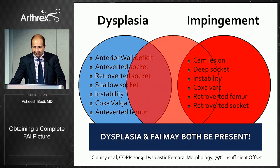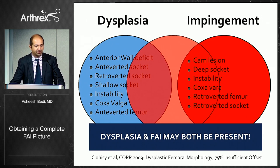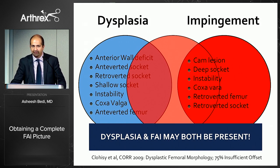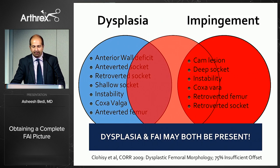This Venn diagram illustrates a continuum. Dysplasia morphology includes increased anteversion, decreased acetabular coverage, and a predilection to the female population. Impingement is the opposite: retroversion, a large cam lesion, a deeper socket. But the Venn diagram isn't entirely accurate because you can have dysplasia and FAI findings in the same patient — proximal femoral cam-type deformity with a shallow socket — and those cases get complicated in a hurry.